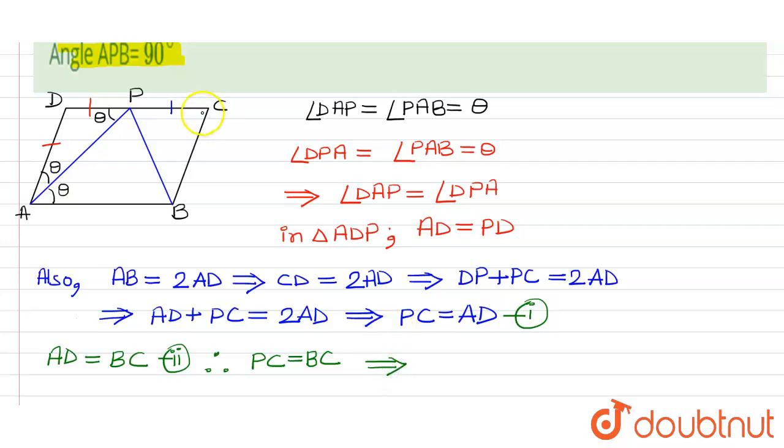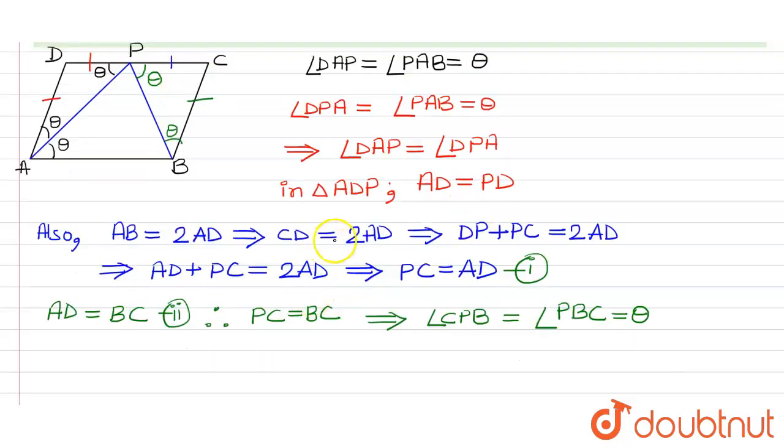So that implies if these two sides are equal, then angle CPB must be equal to angle PBC and this is also equals to theta. So now we can say that angle CPB is equals to angle PBA. So this will also be equal to theta.